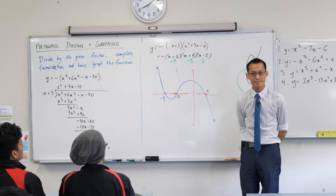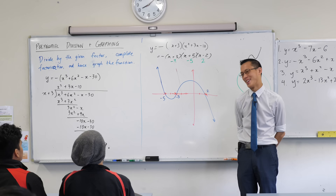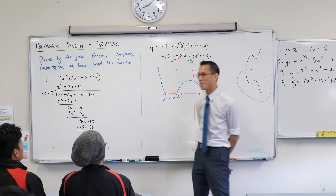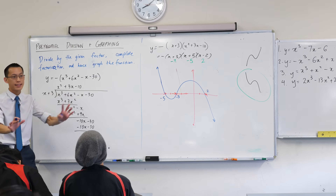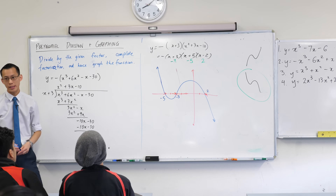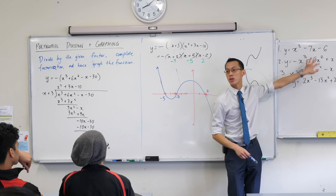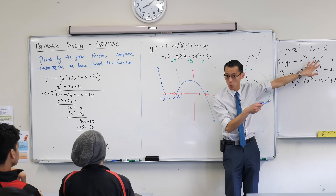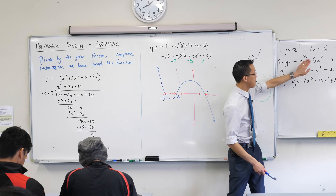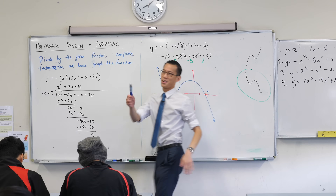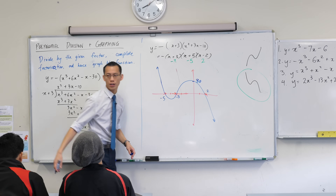The y-intercept is positive 30. How do we find a y-intercept? We let x equal 0. When you put x equal 0 into our original function — that's probably the easiest one — those x terms all disappear and you end up with positive 30. So there, that's at 30 — done.